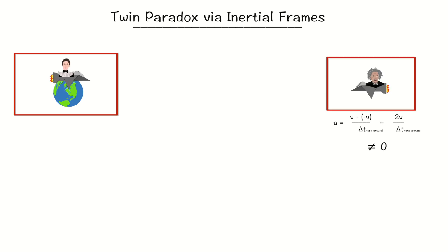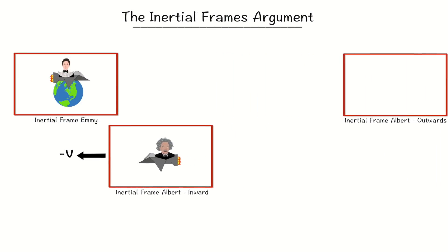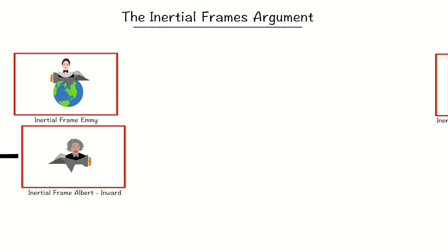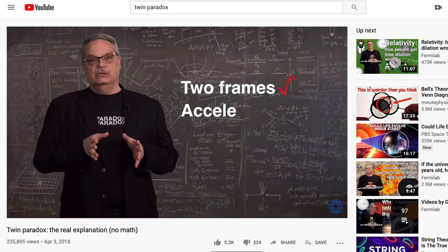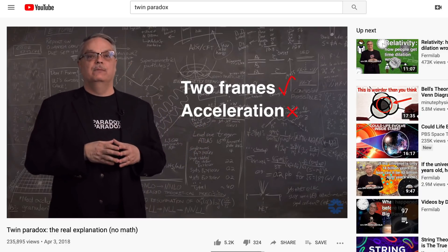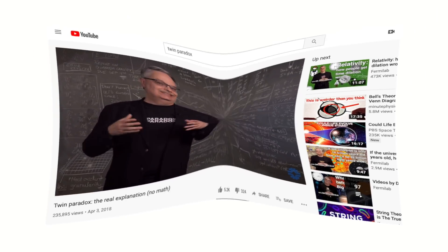He will also have to occupy a third non-inertial frame at the turnaround point, whenever he accelerates or decelerates. The fact that he must occupy two different inertial frames, or, equivalently, one non-inertial frame, while twin A occupies only one, is, according to the proponents of the inertial frames resolution, what produces the asymmetry of the paradox, and results in twin B being younger.